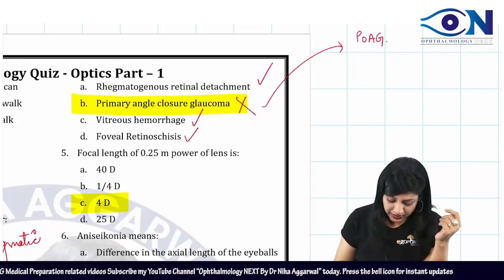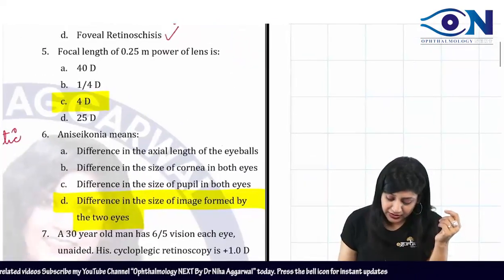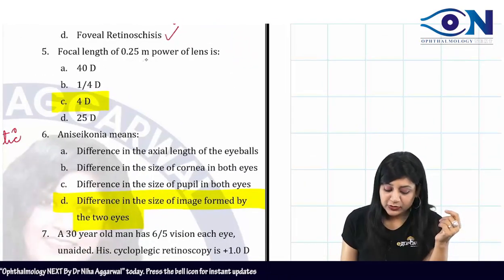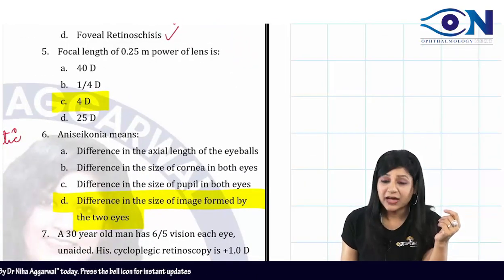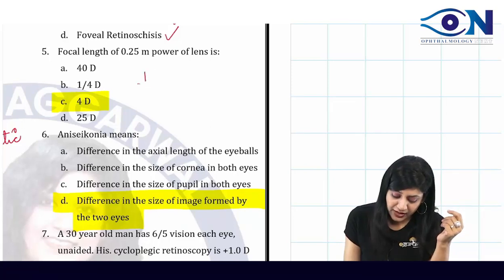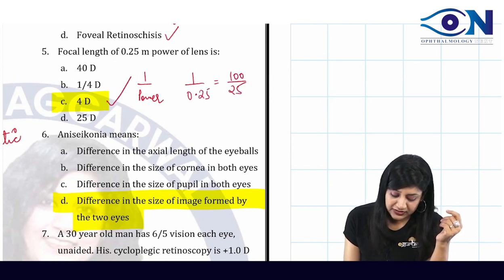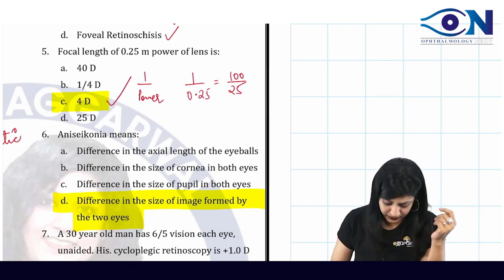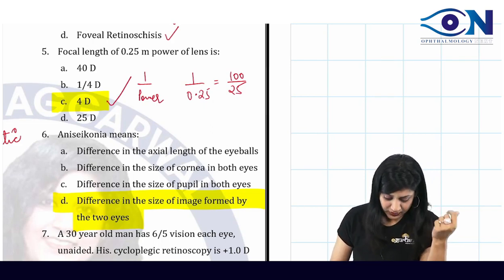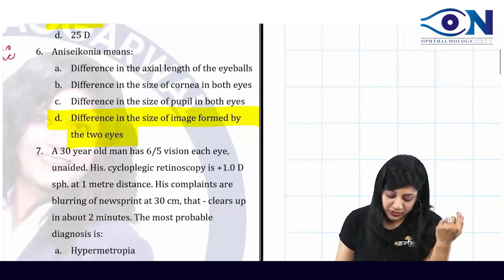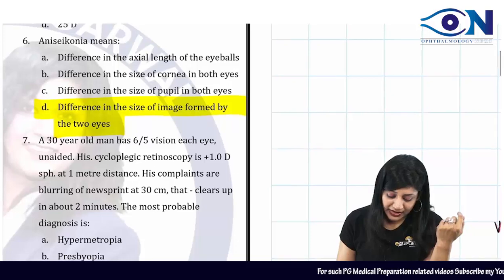Question 5: Focal length of 0.25 meter — what is the power? Focal length equals 1 divided by power, so power equals 1 divided by 0.25, which gives 100/25. Therefore the answer is 4 diopters.